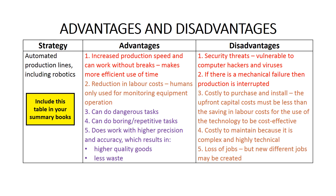Automated production lines and robotics make more efficient use of time because they can produce outputs at a higher speed and, unlike humans, can work without breaks. On the other hand, production can be brought to a halt if the software is hacked or infected by a computer virus, or if there is a mechanical failure.